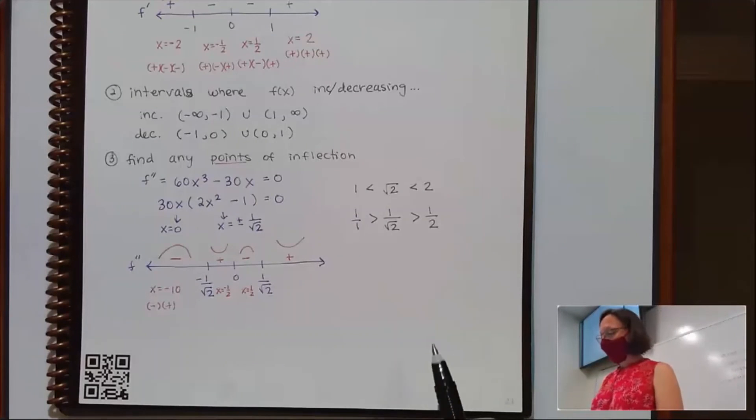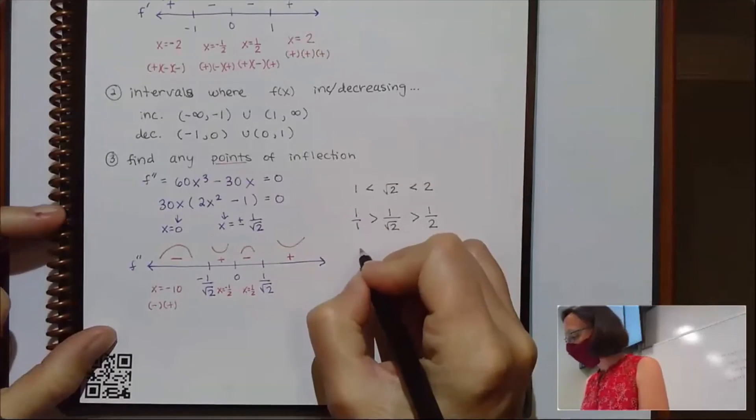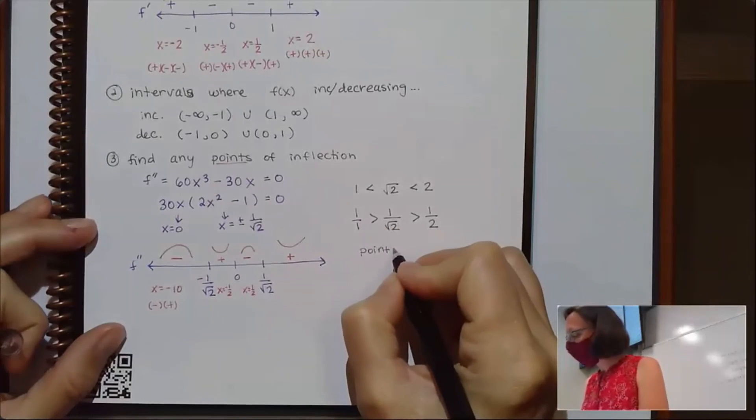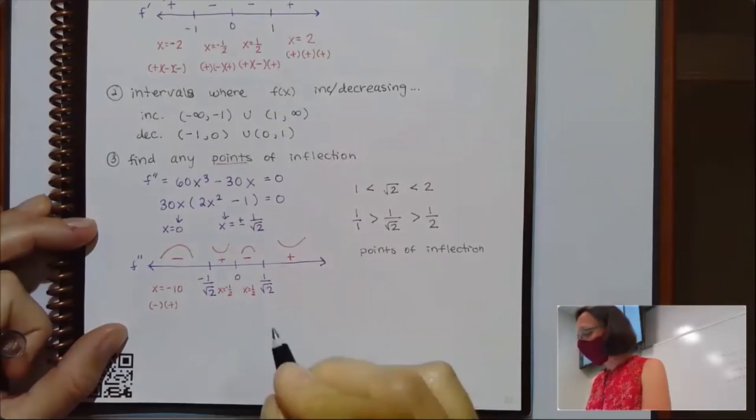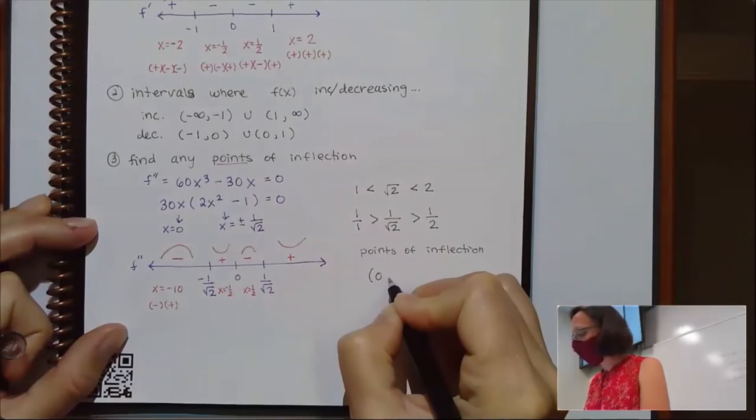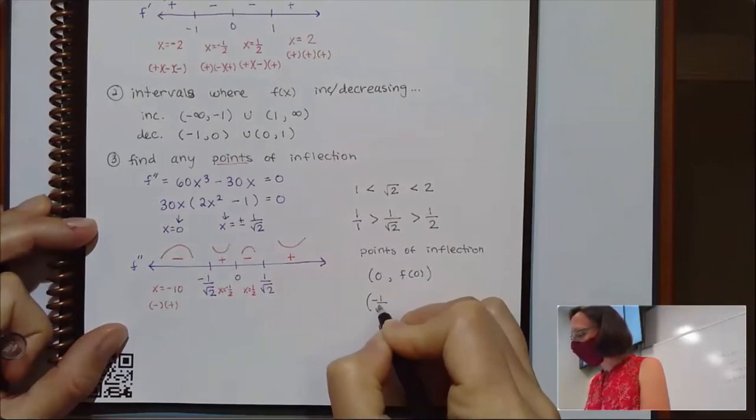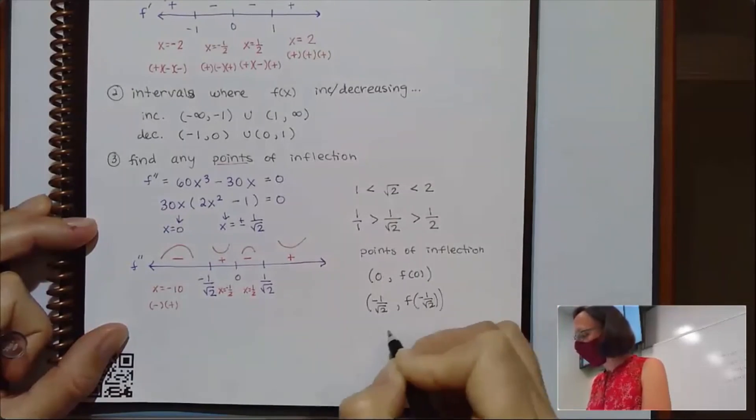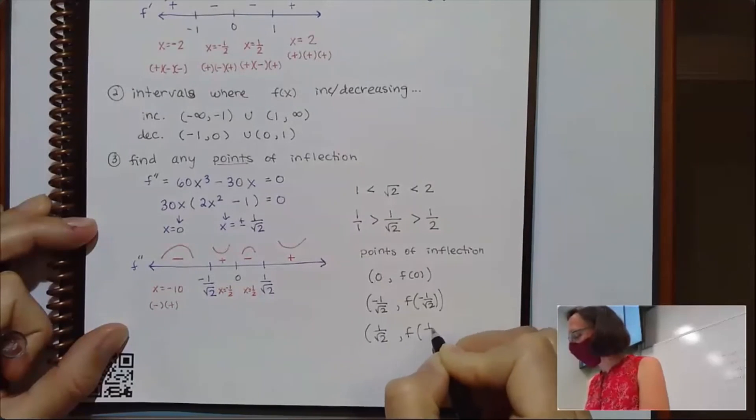Now I'm going to show everybody what I think is a useful trick if you don't get a calculator. And that is, we're going to save ourselves some time. We're going to be right, but we might lose a point or two, and that's okay. So our points of inflection are happening at 0 comma f(0), negative 1 over the square root of 2 comma f of negative 1 over the square root of 2, and 1 over the square root of 2 comma f of 1 over the square root of 2.